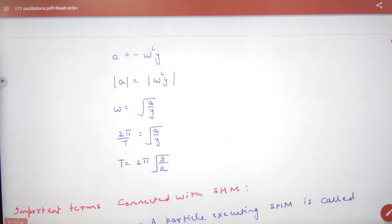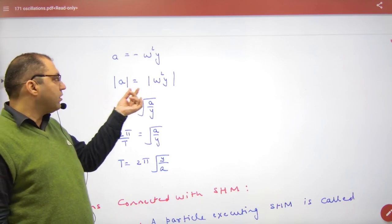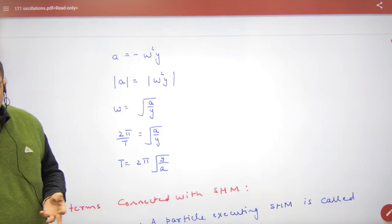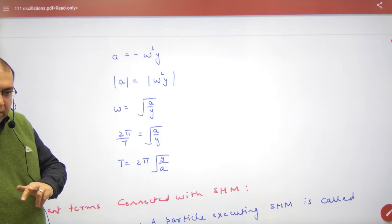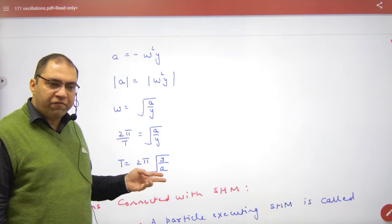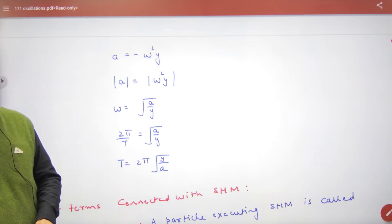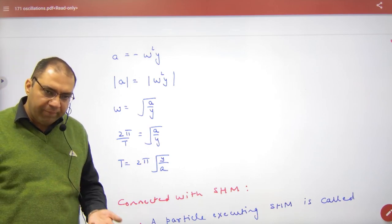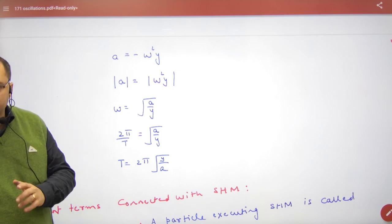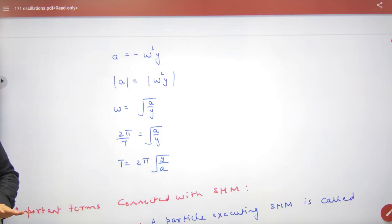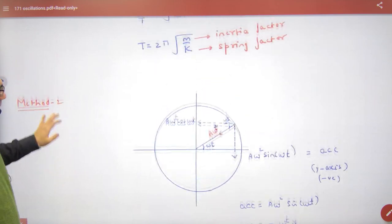Acceleration is minus ω²·y. If we talk about magnitude, we get ω² = acceleration/y, so ω = √(a/y). Since ω = 2π/T, time period T = 2π·√(y/a). This is the generalized equation: if any body is in SHM, time period T = 2π·√(displacement/acceleration).